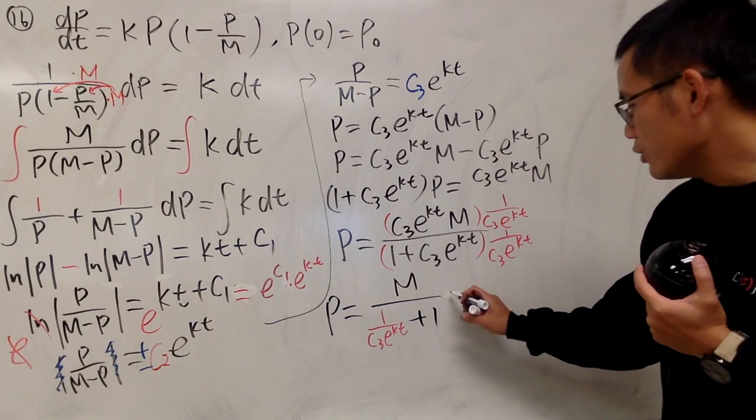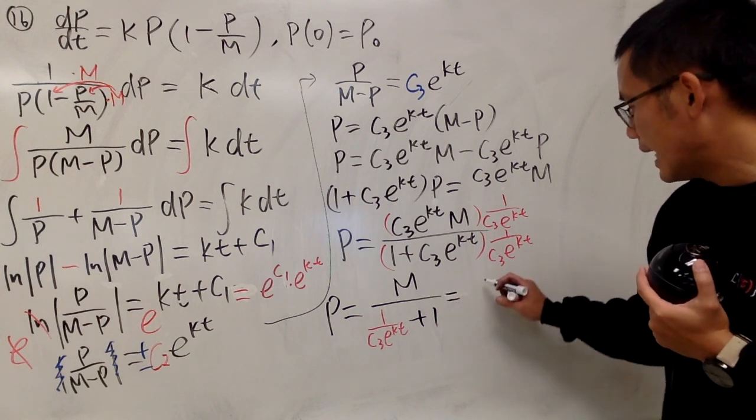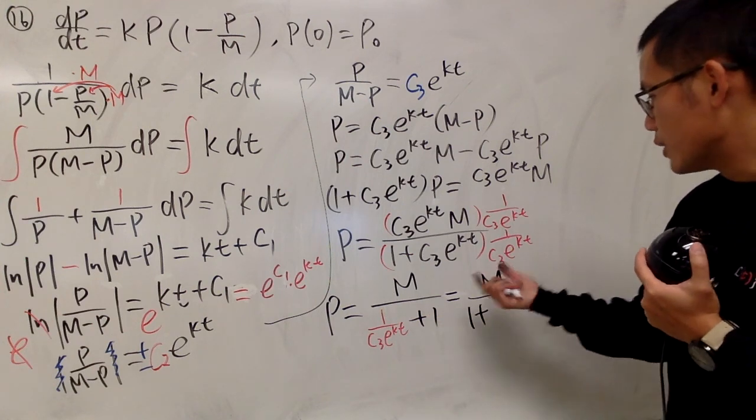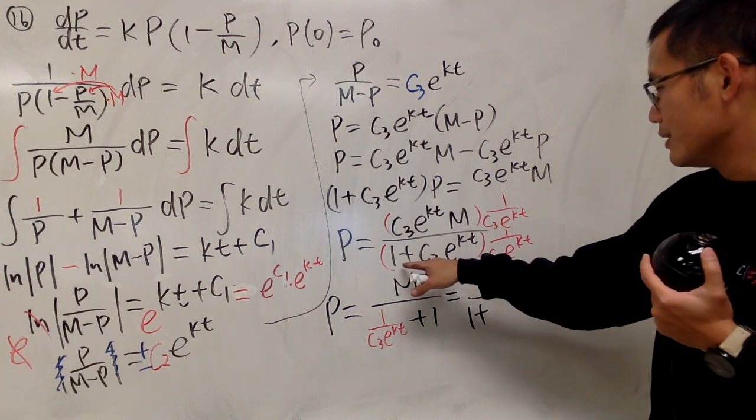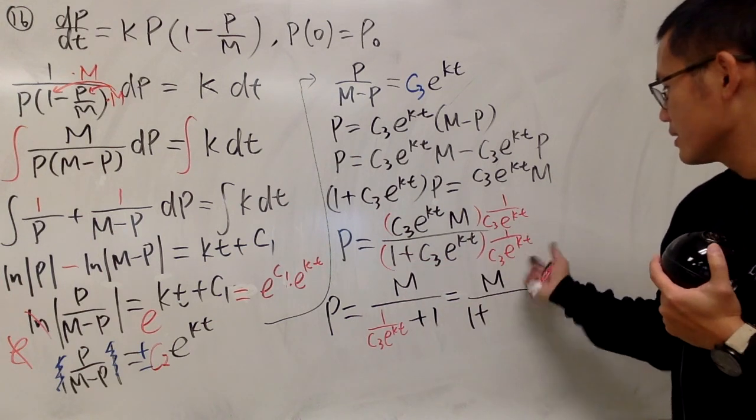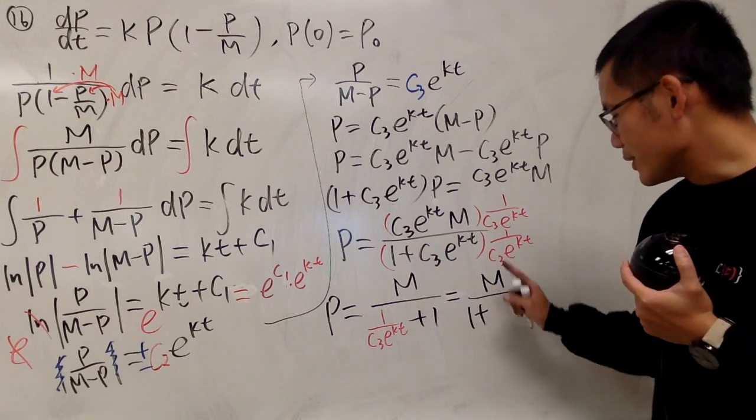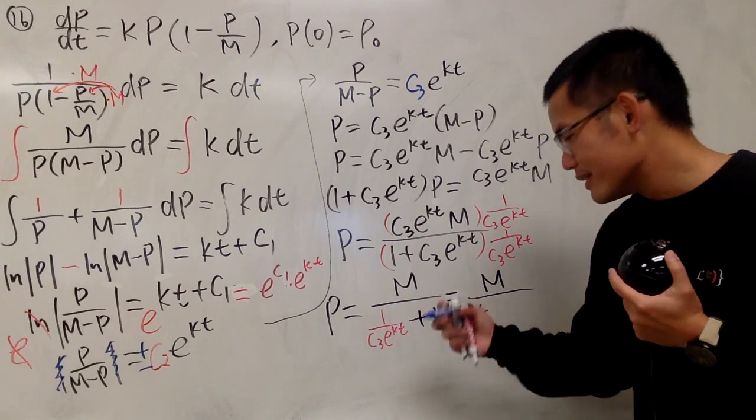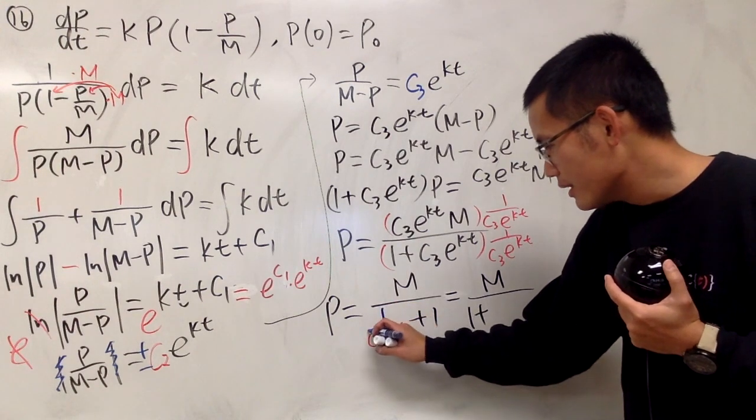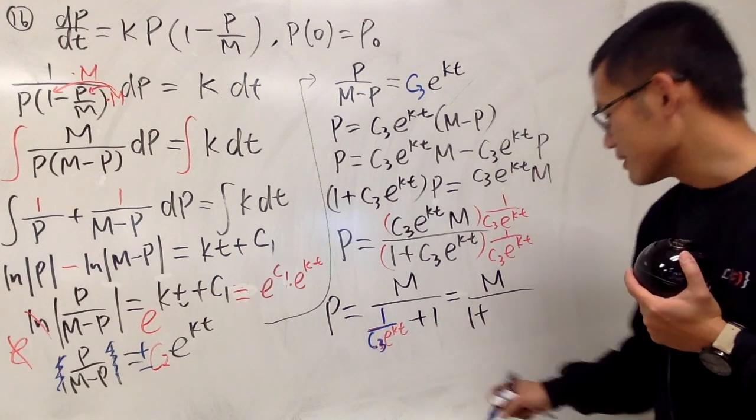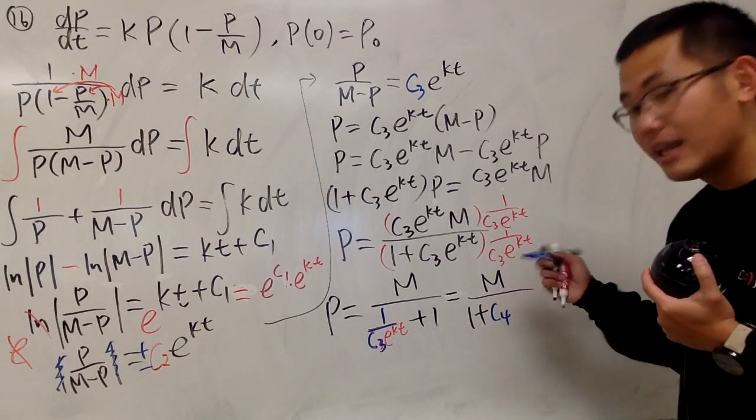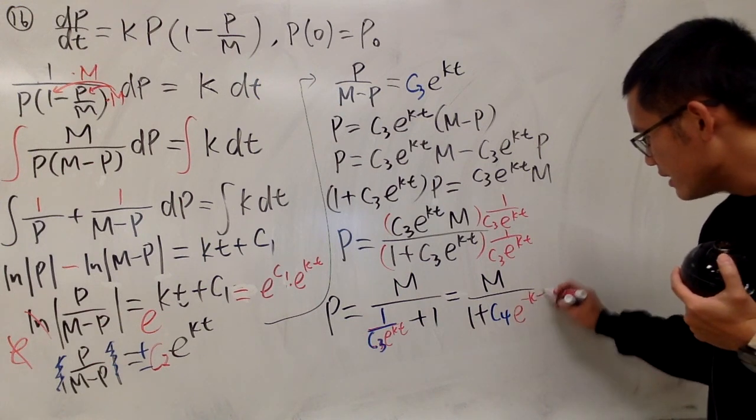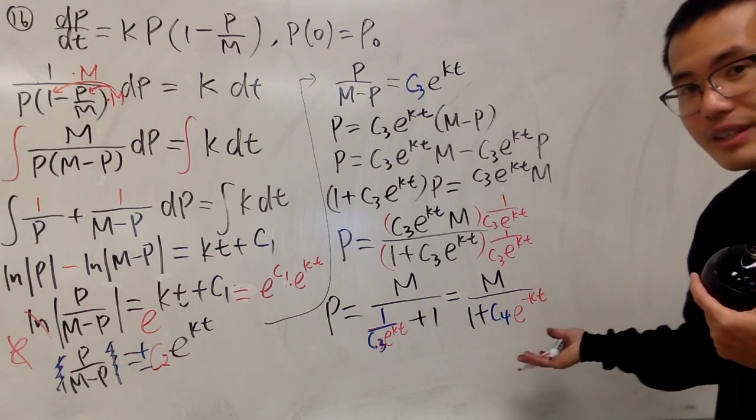I will rewrite it a little bit. I have m on the top over, I will put down the 1 first. The reason I didn't do that earlier is because I don't want to confuse stuff. c₃ is a constant, 1 over c₃ is another constant, so I'll just put that to be c₄. e to the kt in the bottom, I will write it as e^(-kt). So this is the general form for this.